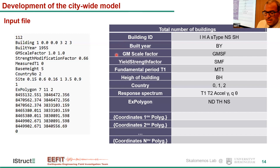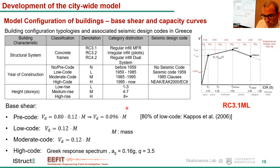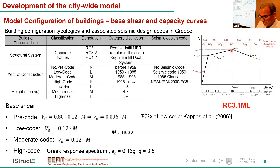Moving on to the different building typologies and associated seismic design codes in Greece — we need to establish, for the multi-shear spring model, a trilinear curve for each building individually, defining the strength and ductility at the nominal yield, peak strength, and collapse points. The categorization of buildings in Greece in terms of structural systems includes mainly concrete frames in three categories: regular in-fill moment-resistant frames, irregular in-fill with pilotis, and regular in-fill dual systems — MRFs with shear walls.